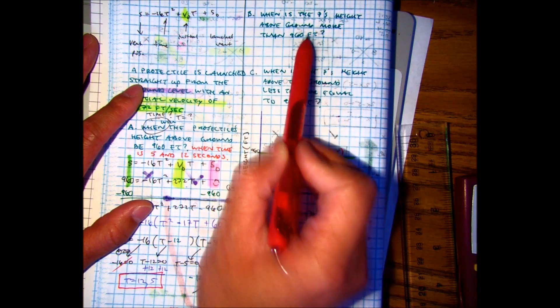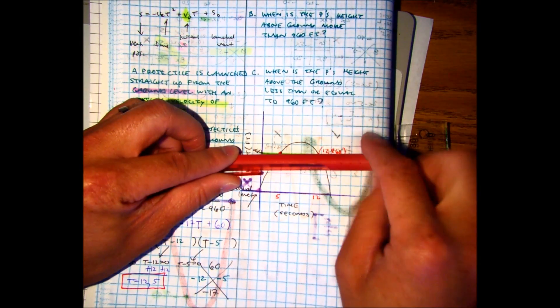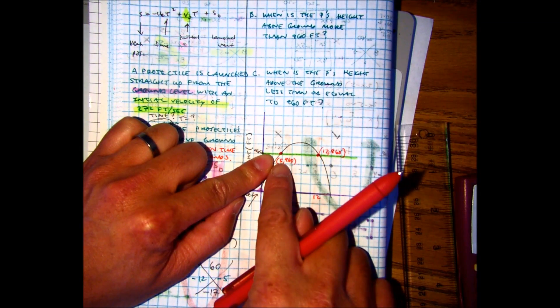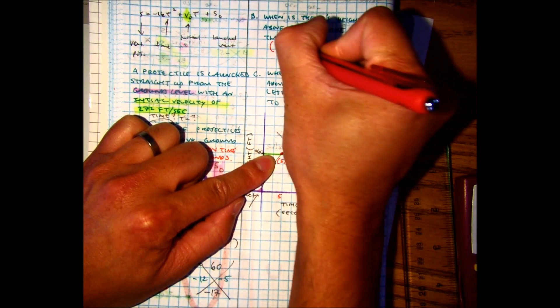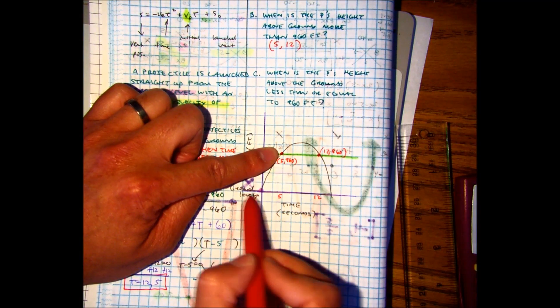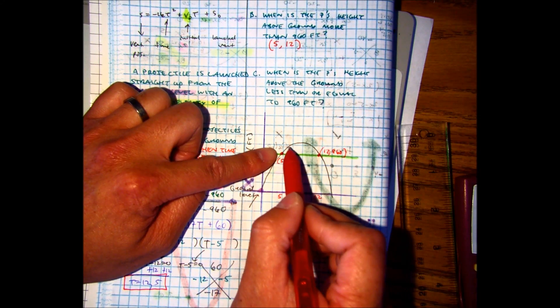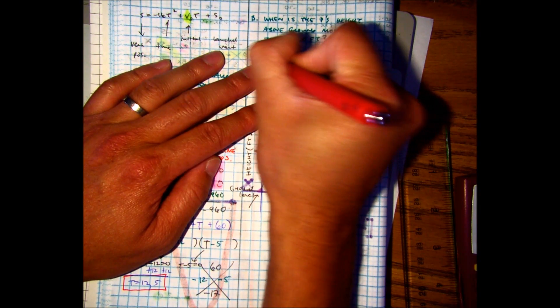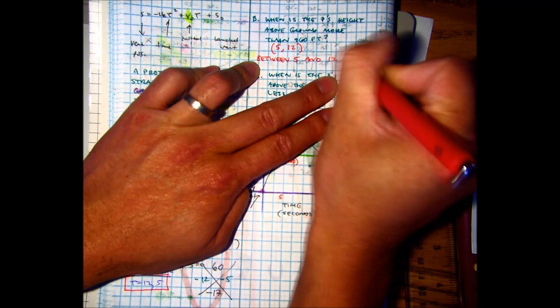So when is it more than 960 feet? Well, this is above the green line, above my pen, that's when it's above 960 feet. So if I look at my time, between time 5 and 12 seconds. Now I'm not including 5 and not including 12 seconds. I'm not including 5 because at 5 seconds, it's exactly 960 feet. And at like 5.1 seconds, it's at 965. Does that make sense? And it's coming back down. So between 5 and 12 seconds.